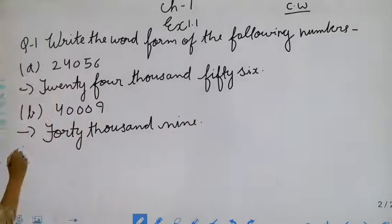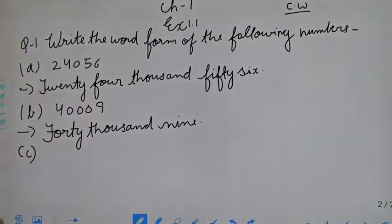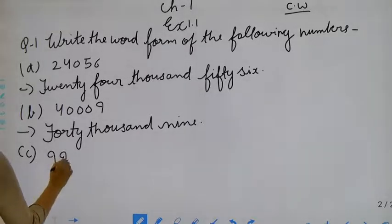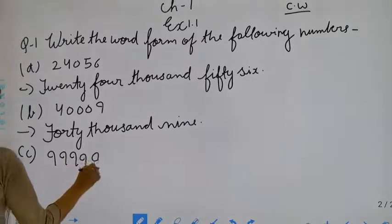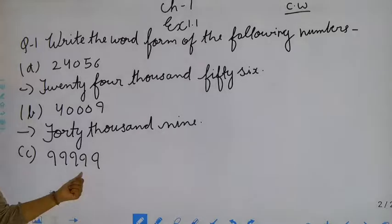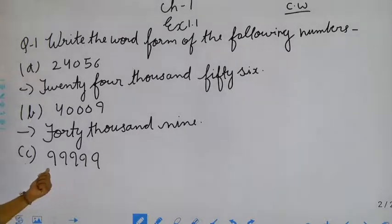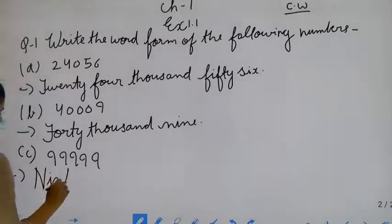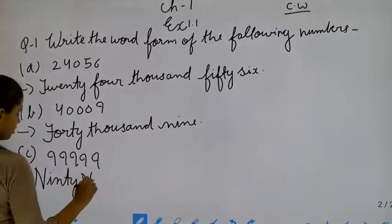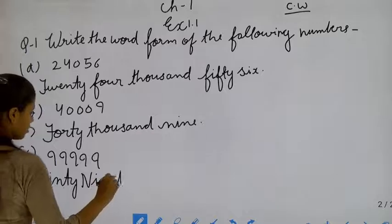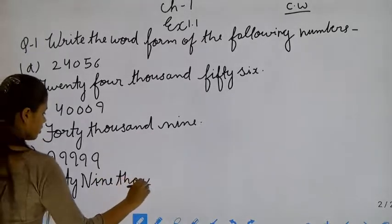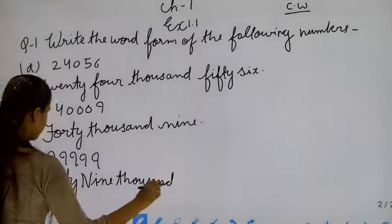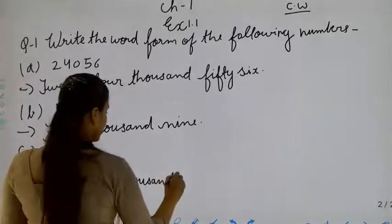Now move to the next part. Once, tens, hundred, thousand, ten thousand — it will be ninety-nine thousand, nine hundred, ninety-nine.